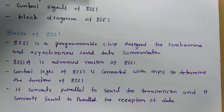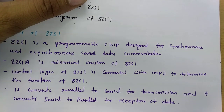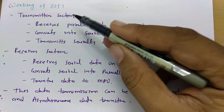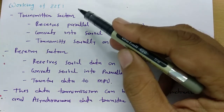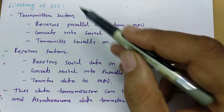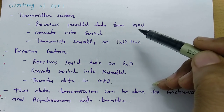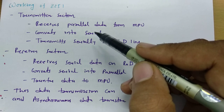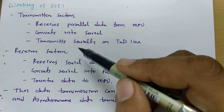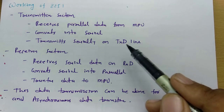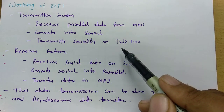Let us look at the basic working of 8251 and then see how control signals work. In the transmitter section, 8251 first receives parallel data from the microprocessor, then converts that parallel data into serial, and that serial data is sent over the transmitter line TxD.